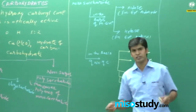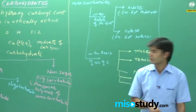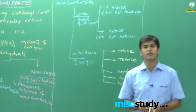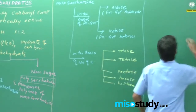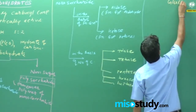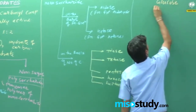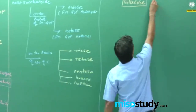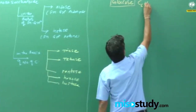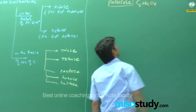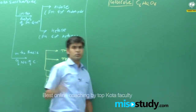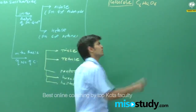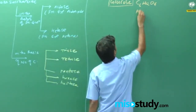Moving to examples of monosaccharides, the most important ones are glucose and fructose. The first example we are studying is glucose. The molecular formula of glucose is C₆H₁₂O₆. It is a monosaccharide and is an aldo-hexose, meaning it has 6 carbons and an aldehyde functional group.